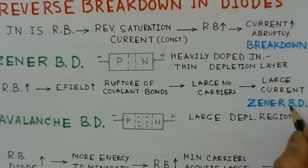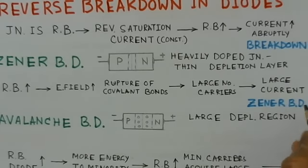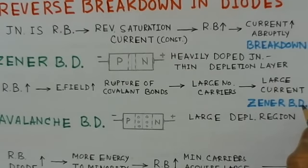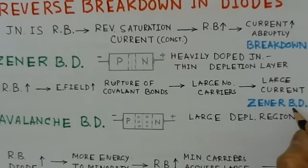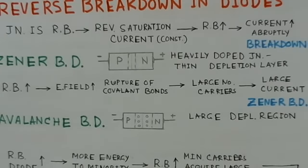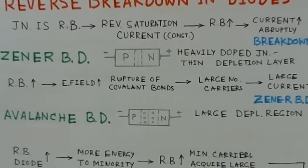A large number of carriers give a large current, and that is called Zener breakdown. Note that Zener breakdown does not spoil the diode — it does not make the diode bad. So the Zener region, which is a breakdown region, is used in Zener diodes.